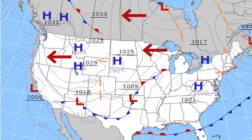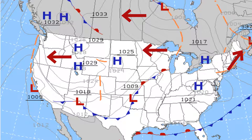If the isobars are very close together, there is a great change in pressure and usually some type of weather event is taking place.